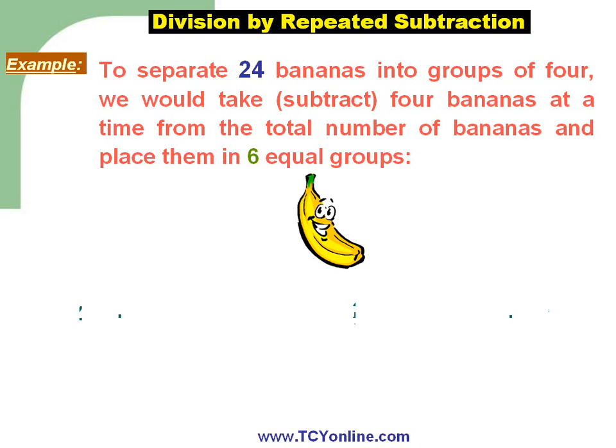From 24 bananas we take away 4, we get 20. Again we take away 4, we are left with 16. Again take away 4, we are left with 12. Again take away 4, we get 8. Again take away 4, we get 4. And again take away 4, we finally get 0.